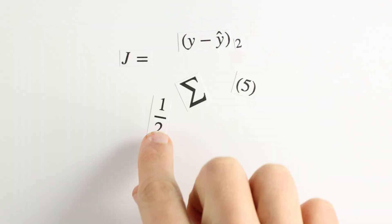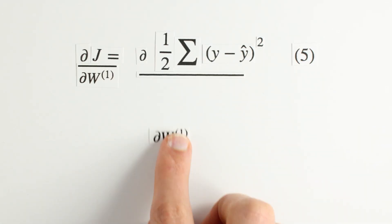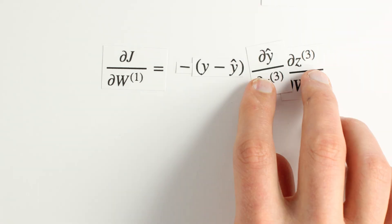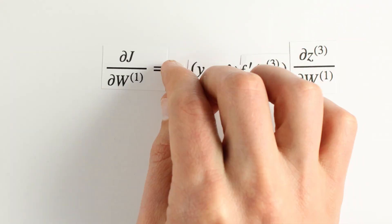We now have one final term to compute, djdw1. The derivation begins the same way as before, by computing the derivative through our final layer. First djdyhat, then dyhat dz3.